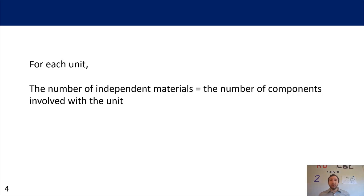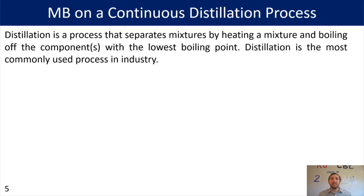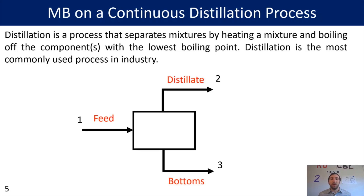For this next problem we're going to be using a distillation process, which I discussed briefly in part 2. Distillation is a process that separates mixtures by heating a mixture and boiling off the components with the lowest boiling point. It is the most commonly used process in industry, and it is also very energy intensive — costing companies about 40 to 60 percent of their electric bill. As a quick reminder: the stream coming into the distillation column is called the feed, the stream coming out the top is the distillate, and everything left over coming out the bottom is called the bottom stream.